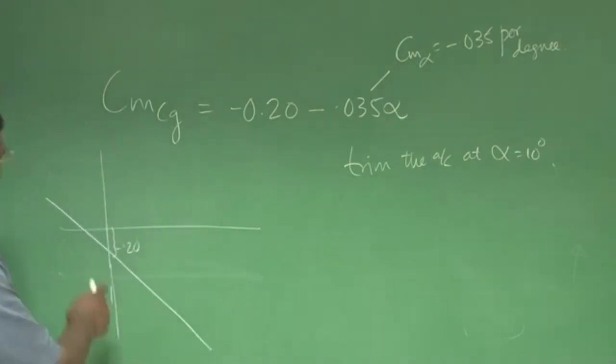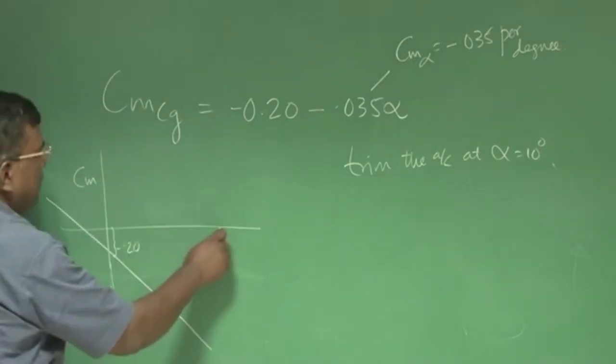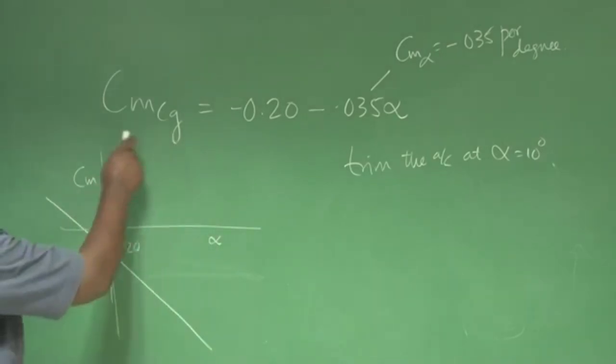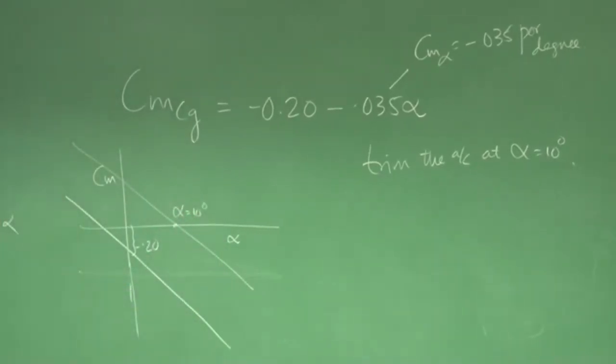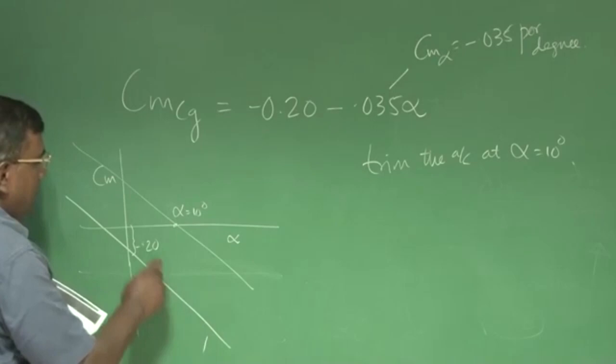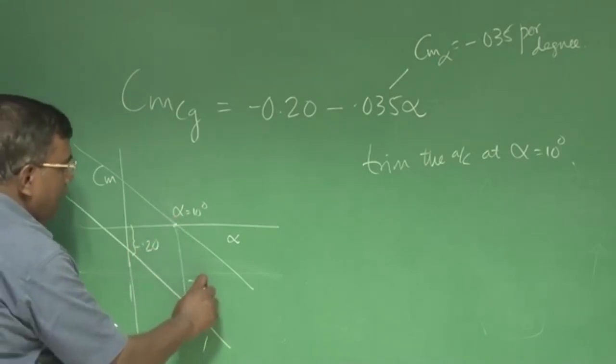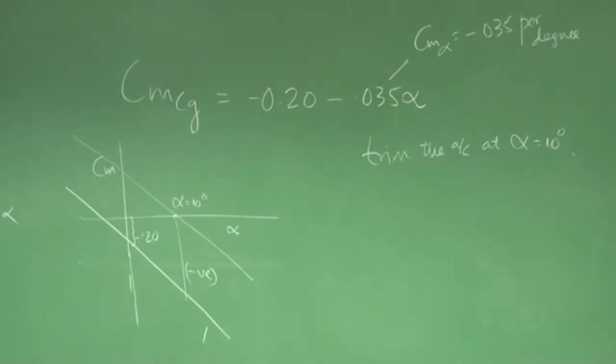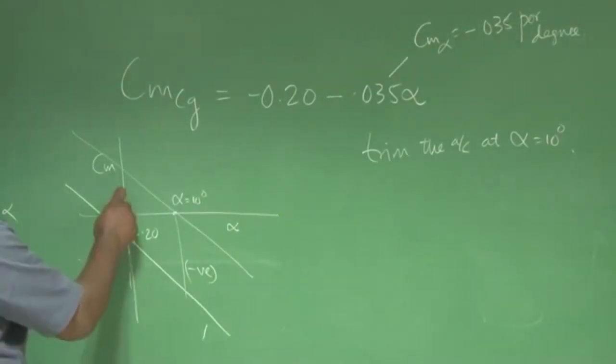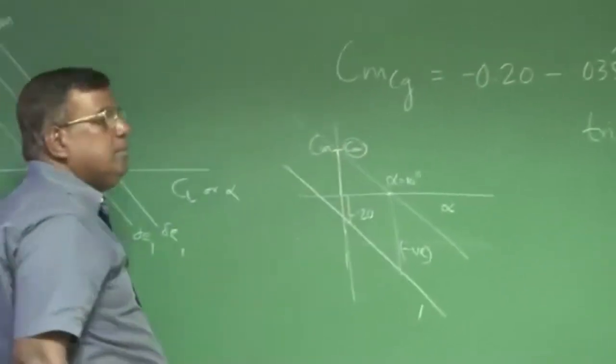So what is the problem? This aircraft has CM versus alpha like this, but I have to fly and trim the airplane at alpha equal to 10 degrees. That means if I have to fly at alpha equal to 10 degrees, this airplane at 10 will generate automatically a negative moment. So I have to counter the negative moment. In a sense, that CM naught I have to ensure is raised to this point, then only I can trim it here.